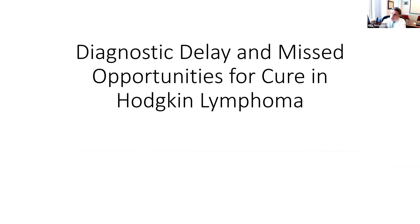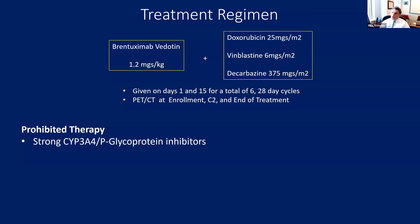I want to talk about diagnostic delay and missed opportunities for cure — but first, I want to persuade you that a cure is possible in almost everyone if there's not horrendous delay in making a diagnosis. The AIDS Malignancy Consortium recently finished a trial of a regimen recently approved for people without HIV with Hodgkin lymphoma, involving a new drug, Brentuximab — a monoclonal antibody with chemotherapy attached that targets CD30 on the surface of tumor cells. This is now a frontline therapy for Hodgkin lymphoma in people without HIV.